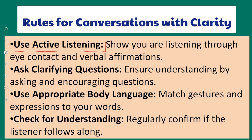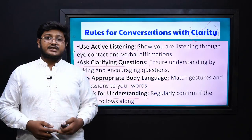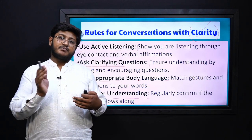You also have to listen actively. As a response during conversation, you have to listen actively as well. When someone else speaks during the conversation, listen in an active way to make proper responses. If you do not understand some point, you can ask clarifying questions, which will add clarity to your conversation. Use appropriate body language — proper gestures, movements, and expressions to make the conversation more clear. Check for understanding: confirm what you have listened to or understood is correct. These are the rules which create clarity in communication.